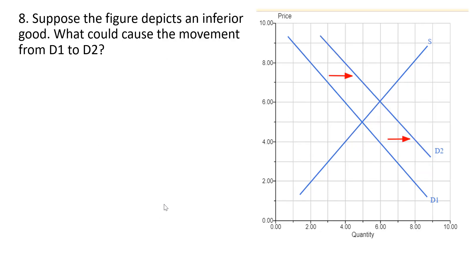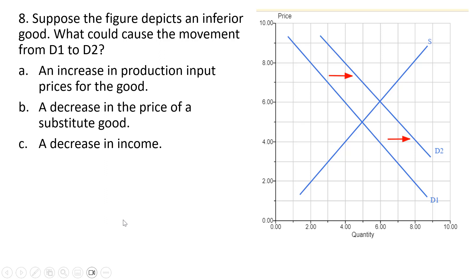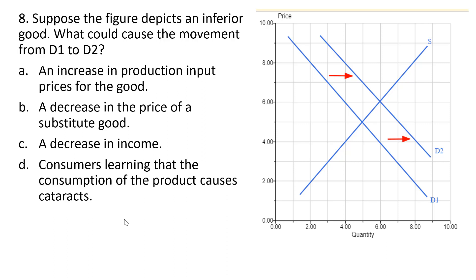Question 8. Suppose the figure depicts an inferior good — what could cause the movement from D1 to D2? We can eliminate answer choice A: an increase in production input prices would cause a decrease in supply, not shown here. A decrease in the price of a substitute good would cause a decrease in demand — no. A decrease in income for an inferior good causes demand to increase — that is correct. Consumers learning the product causes cataracts would cause demand to decrease — no. The correct answer is C.